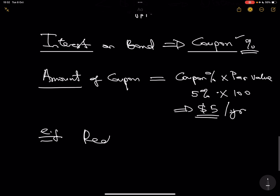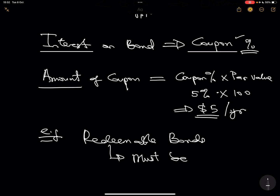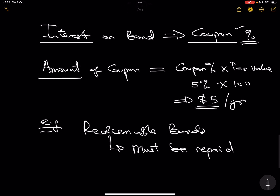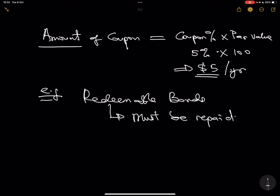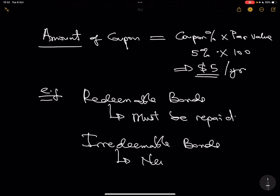You can also have redeemable bonds, which means the bonds must be repaid back. You might wonder — can some debts not be repaid? Yes. Some debts are not repaid, and that is why they are called irredeemable bonds. Irredeemable bonds behave like equity — never repaid; you just earn fixed interest.